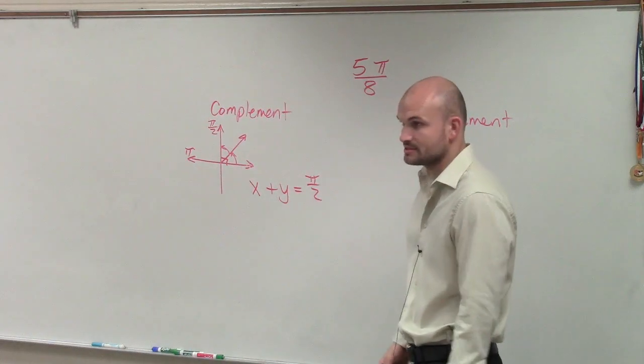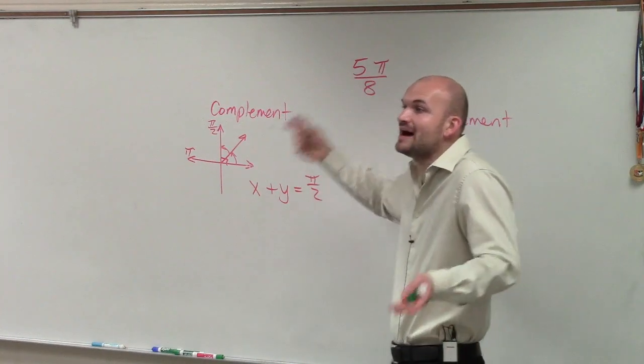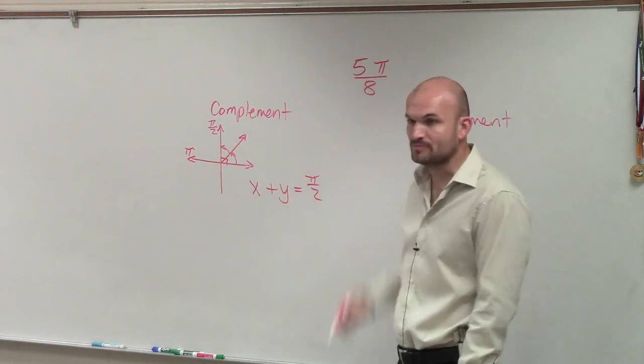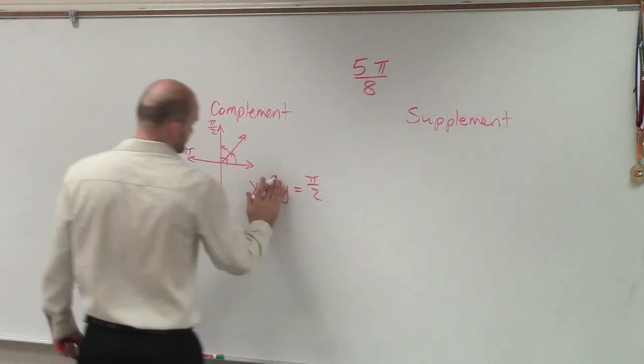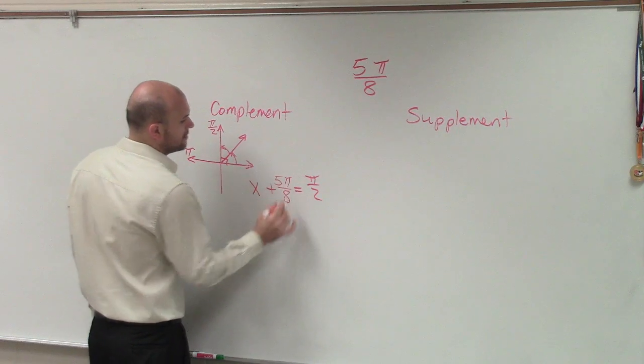Now, do we know what one of the angles is that we have? Yeah, they say find the complement of 5π/8. That means find the other angle that's going to add up to 5π/8 that will give you π/2. So what we'll do is just write that in there, 5π/8.